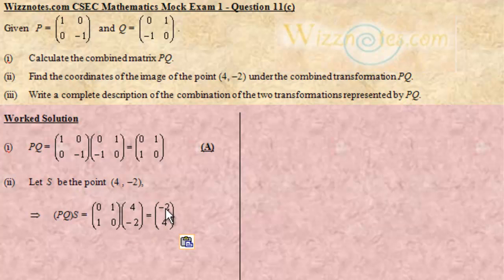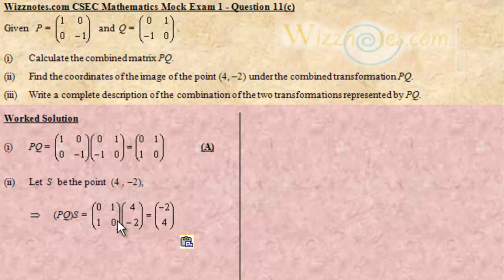We multiply along the row and down the column. The first element: 0×4 = 0, and 1×(-2) = -2, so 0+(-2) = -2. The second element: 1×4 = 4, plus 0×(-2) = 0, so 4+0 = 4. Hence the vector for the image of the point is (-2, 4).